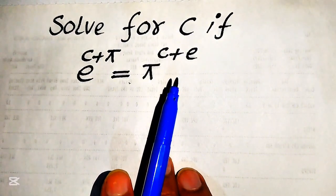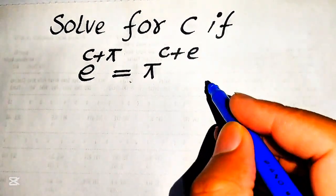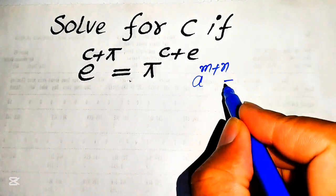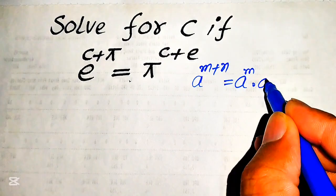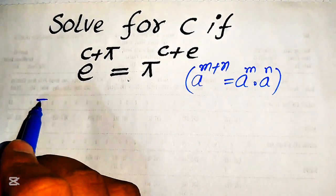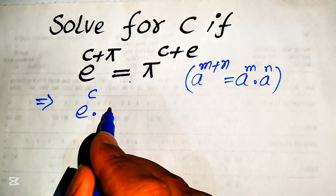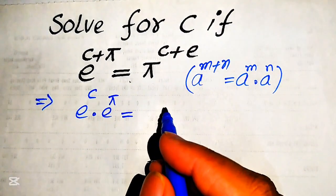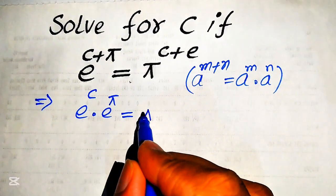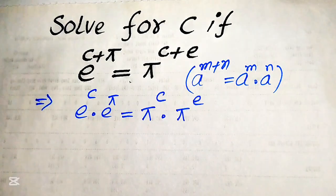The very first step is to apply the exponent law: a to the power of m plus n equals a to the power of m multiplied by a to the power of n. According to this law, we break the left-hand side as e to the power of c multiplied by e to the power of pi, and the right-hand side as pi to the power of c multiplied by pi to the power of e.